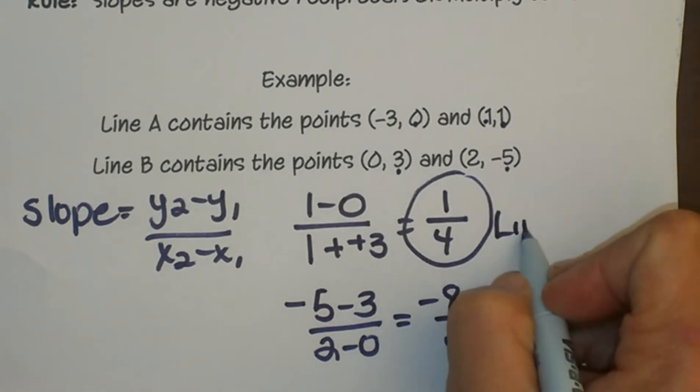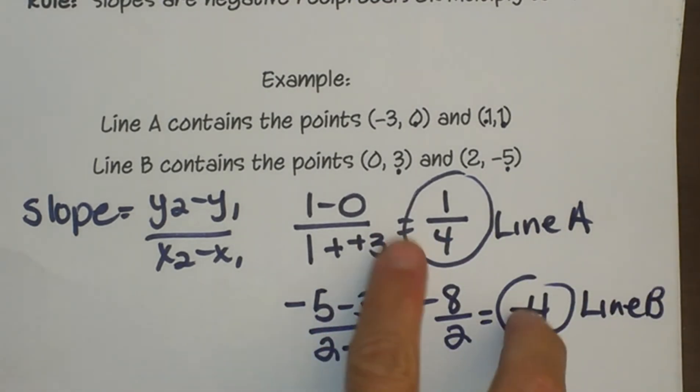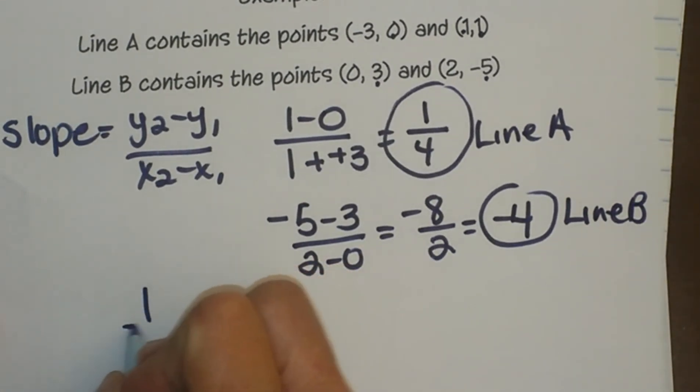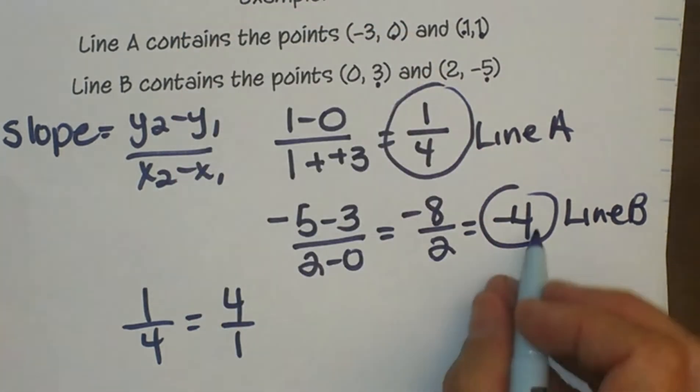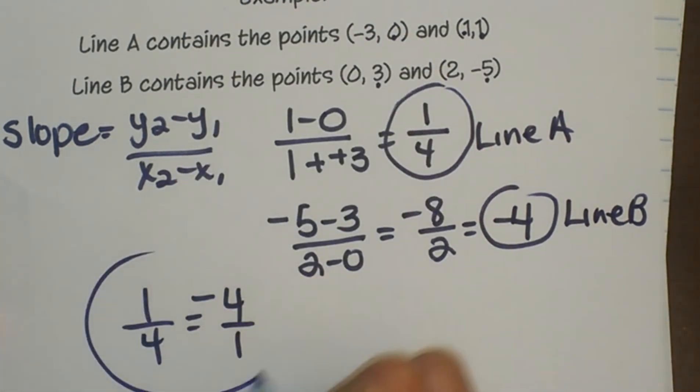So here is line A's slope and here is line B's slope. Now let's see, are they negative reciprocals of each other? They are, because a reciprocal is when you flip it. So 1/4, if I flip it, it becomes 4 over 1, and negative means it is the opposite sign, so negative 4 is its reciprocal. So yes they are indeed perpendicular.